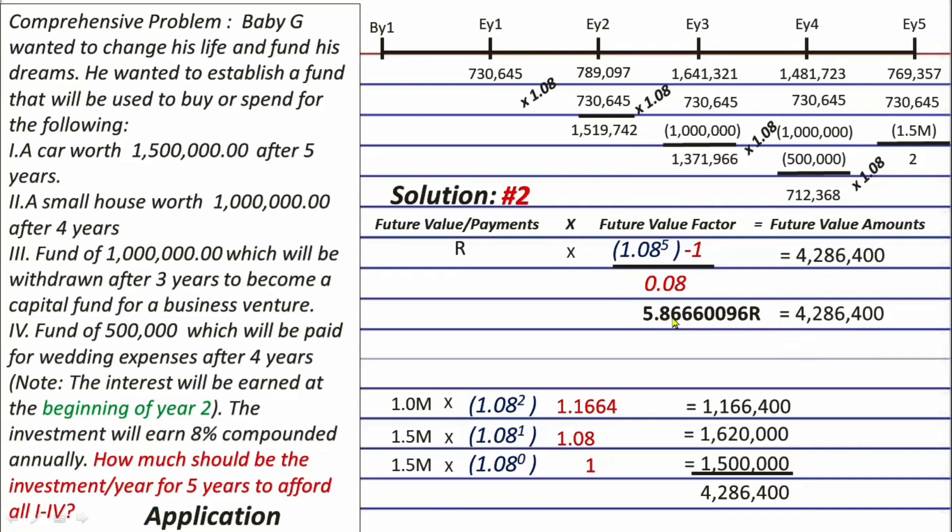It's just 5.86660096R equals 4,286,400. Let's divide both sides with 5.86660096. And we will have R on the left side. And on the right side, we have 4,286,400 divided by 5.86660096. And that will be equal to 730,645 still, the same with the R in our solution number 1. That's solution number 2.